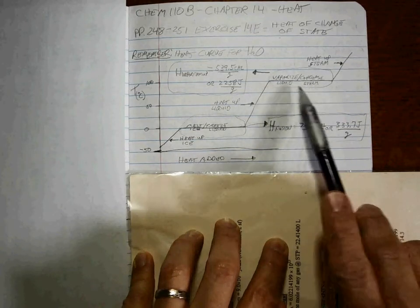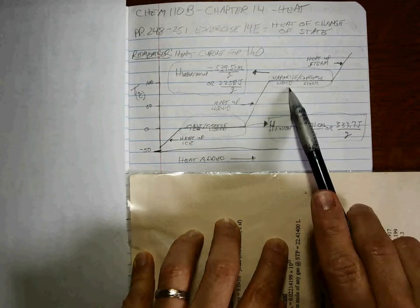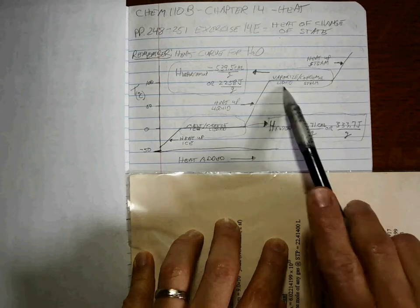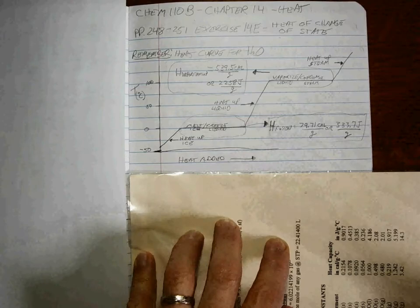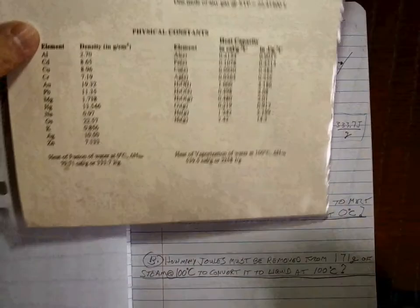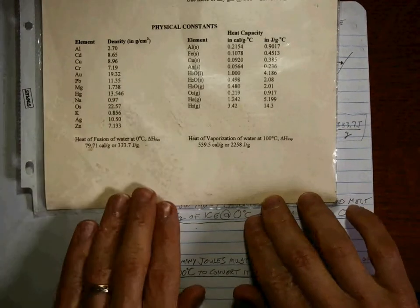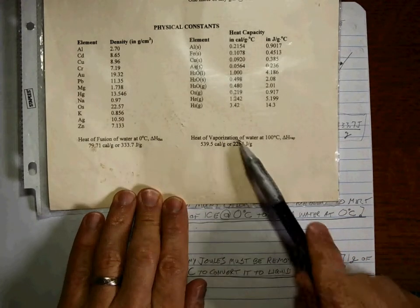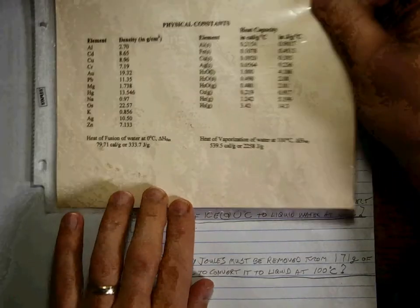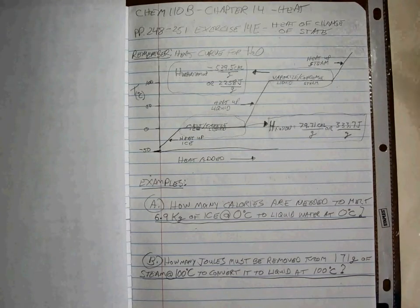And for vaporizing liquid water or condensing steam down into liquid, these are the conversion factors that you use. And guess what, you get these. Okay, so here it is right here at the bottom: heat of fusion of water, heat of vaporization of water.